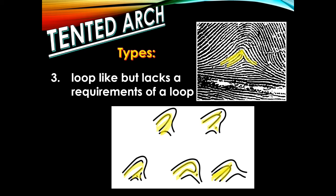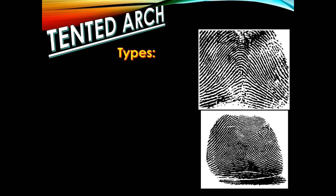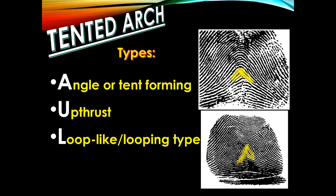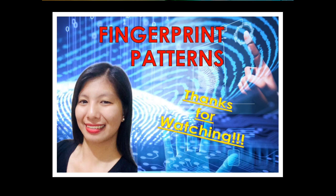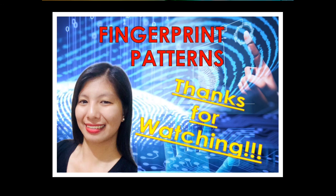We will learn about the loop pattern and its elements in our next video. More examples under the tented arch include the loop-like or looping type which lacks the requirement of a loop, and the tent-forming type. Remember the types using the acronym AUL: A for angle or tent-forming, U for upthrust, and L for loop-like or looping type. Thank you for watching our video lecture on fingerprint patterns.